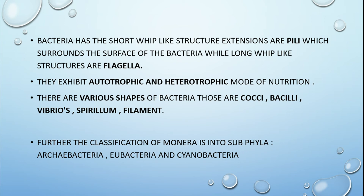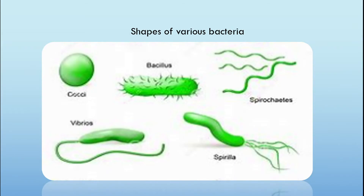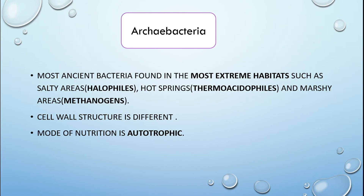The further classification of Monera is into Archibacteria, Eubacteria, and Cyanobacteria. Archibacteria are the most ancient bacteria, found in extreme habitats such as salty areas (halophiles), hot springs (thermoacidophiles), and marshy areas (methanogens). The cell wall structure is very different in Archibacteria, and autotrophic mode of nutrition has been found in them.